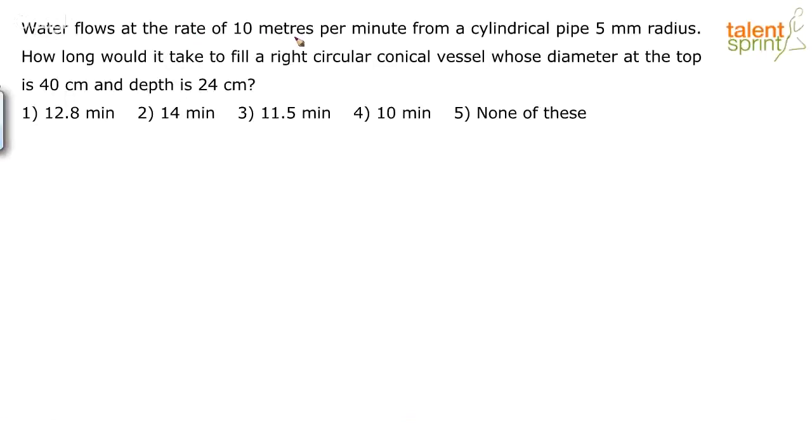Water flows at the rate of 10 meters per minute from a cylindrical pipe, 5 mm radius. How long would it take to fill a right circular conical vessel whose diameter at the top is 40 centimeters and the depth is 24 centimeters?